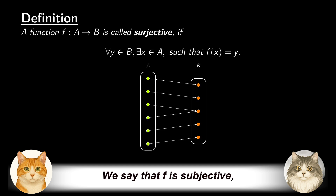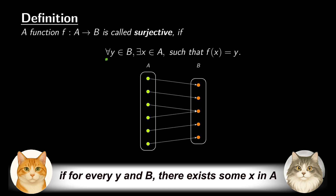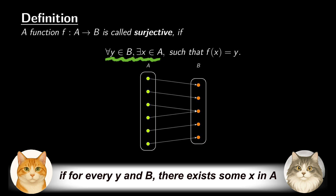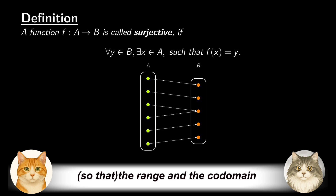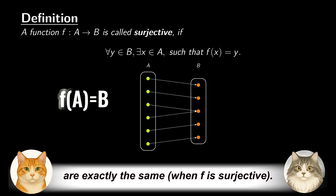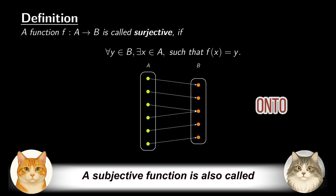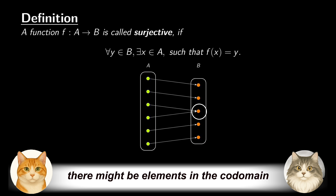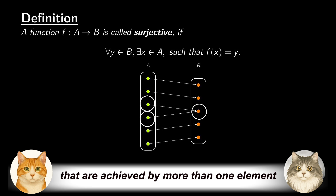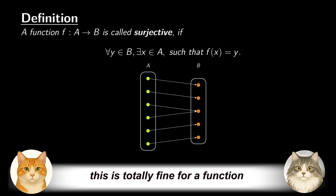We say that F is surjective if, for every y in B, there exists some x in A such that f(x) equals y. In other words, everything in the codomain gets hit by someone in the domain under the map. The range and the codomain are exactly the same. A surjective function is also called an onto function. Note that there might be elements in the codomain that are achieved by more than one element in the domain — this is totally fine for a function to be surjective.